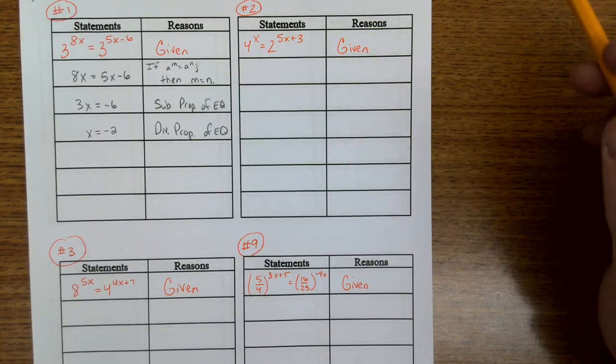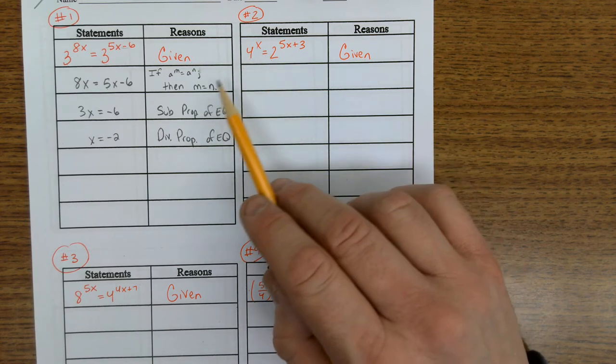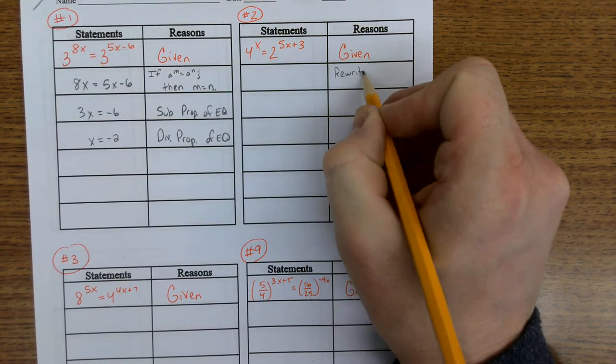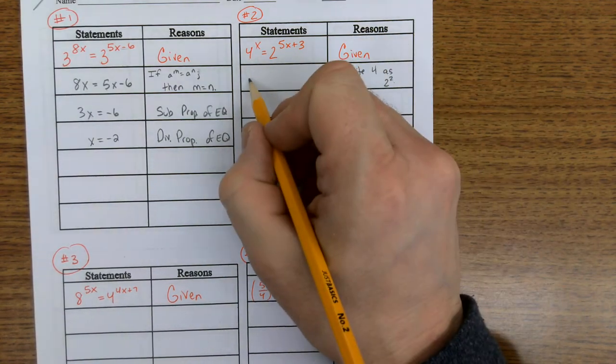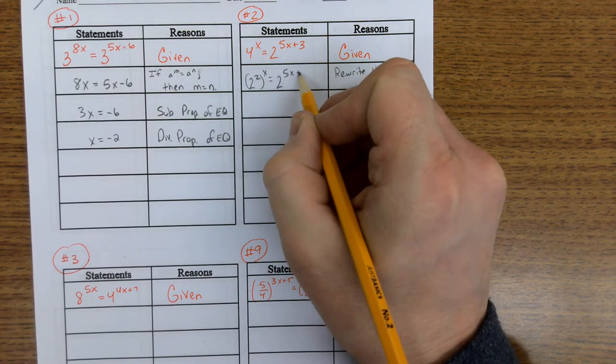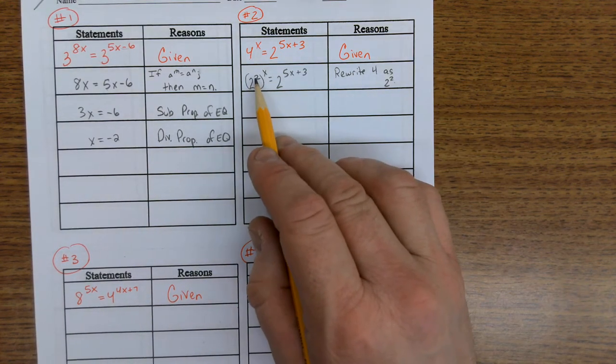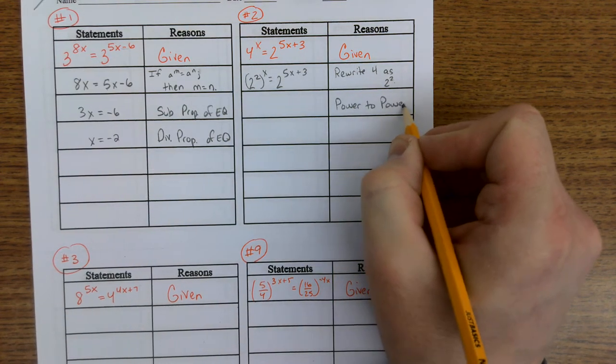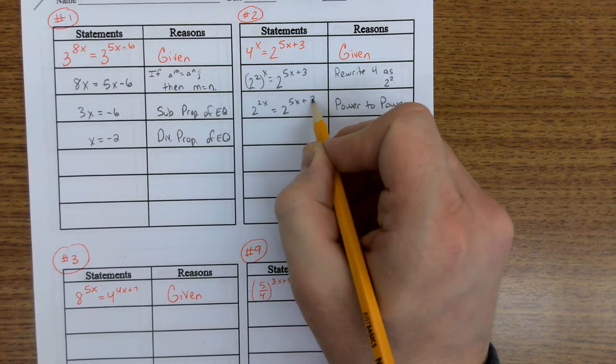On problem number 2, the problem we have is different bases, 4s and 2s, so we can't use this rule. What we do is rewrite the base. We rewrite 4 as 2 to the second power because 4 is 2 to the second power. So now I have 2 to the second equals 2 to the 5x plus 3. Now we have both 2s, but I'm still dealing with this exponent here. Let's get rid of this exponent with power to power, which means I multiply this. So we have 2 to the 2x equals 2 to the 5x plus 3.